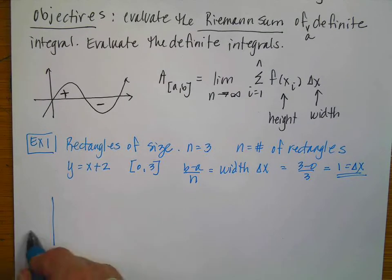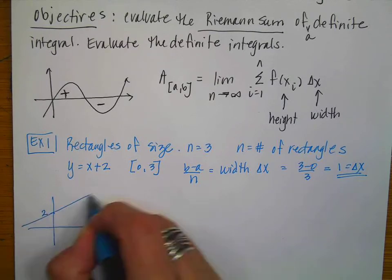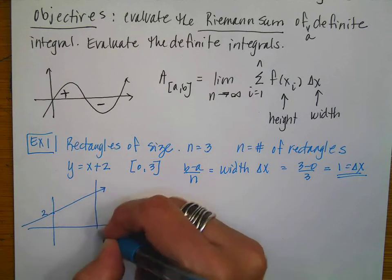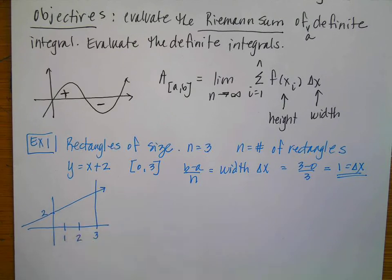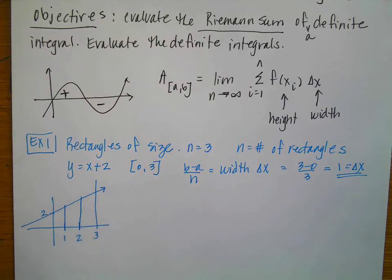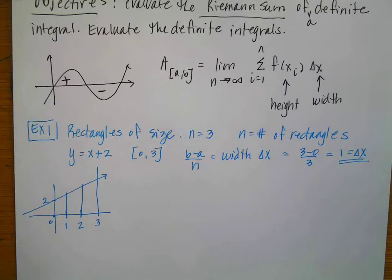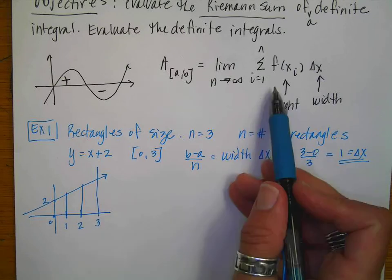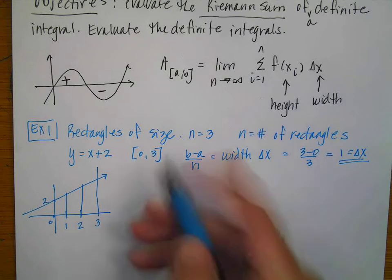I want to draw a picture of what this will look like. My function is y equals x plus 2, so if this is 2 my function goes this way. Going from 0 to 3, I have 1, 2, 3 rectangles. This is an increasing function, and depending on whether I use the left or the right endpoint, that's either going to overestimate or underestimate the area. What we're going to do is sum the individual rectangles.